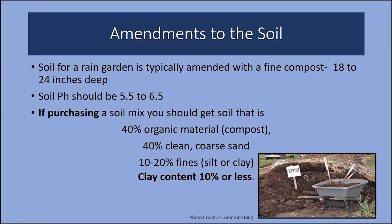Depending on the results of your soil test, you may want to remove 12 to 18 inches of native soil — particularly if it's clay — before adding a more porous rain garden soil mix. The formula is roughly 40% organic material, 40% clean coarse sand, and 10 to 20% fines (silt or clay). Soil pH should be 5.5 to 6.5. Use as much of your native soil as possible — you do not need to order a soil mix, as you can amend your soil adequately yourself. Some companies now provide a rain garden soil mix, but be a smart consumer and ask what it contains.